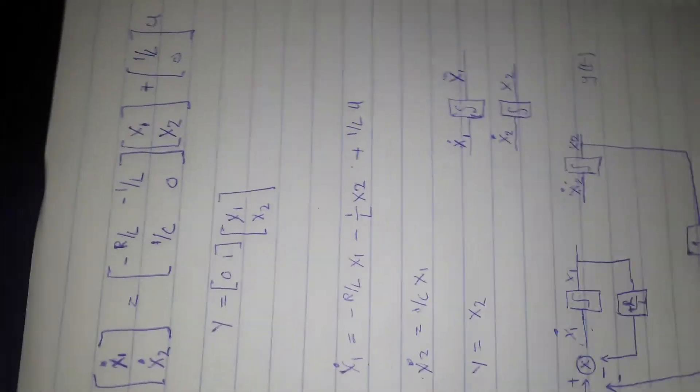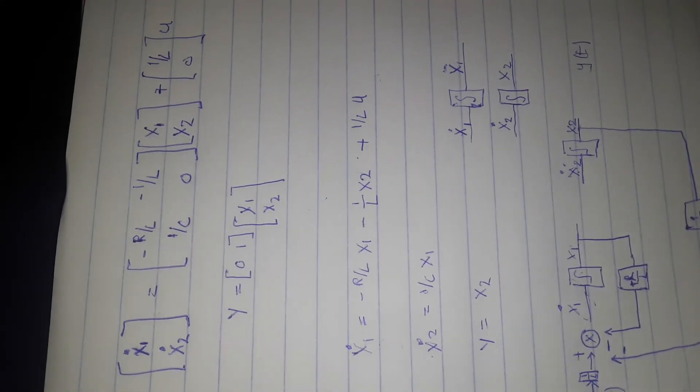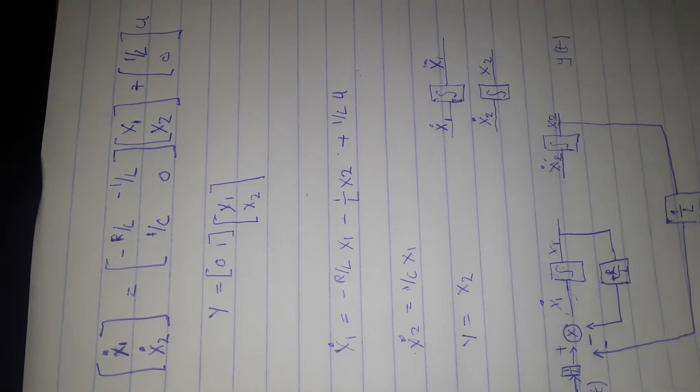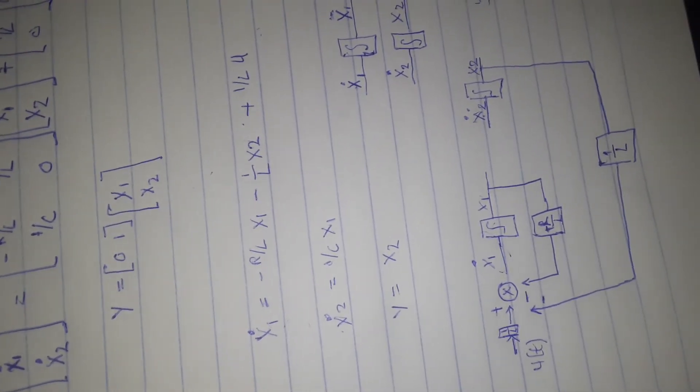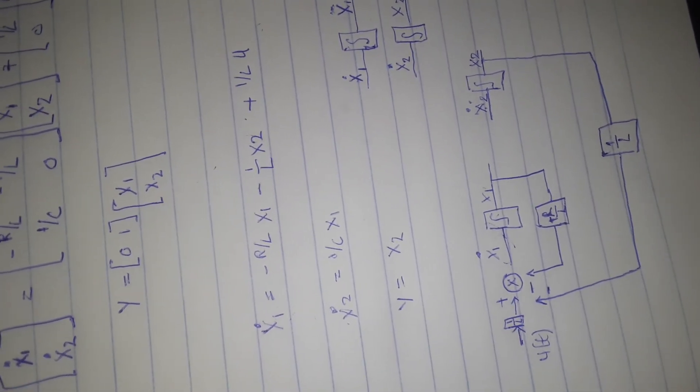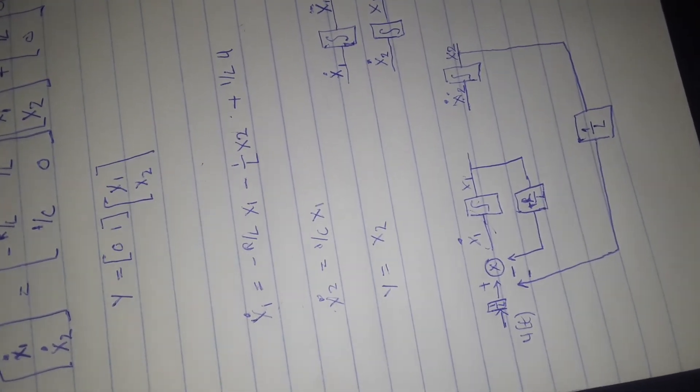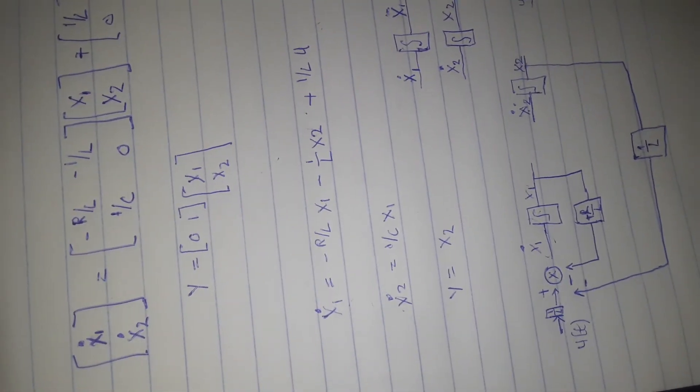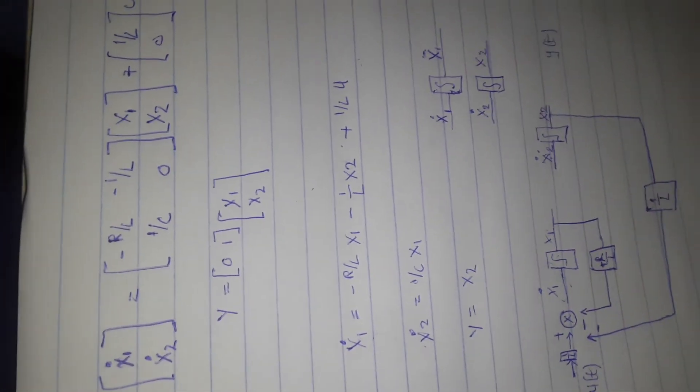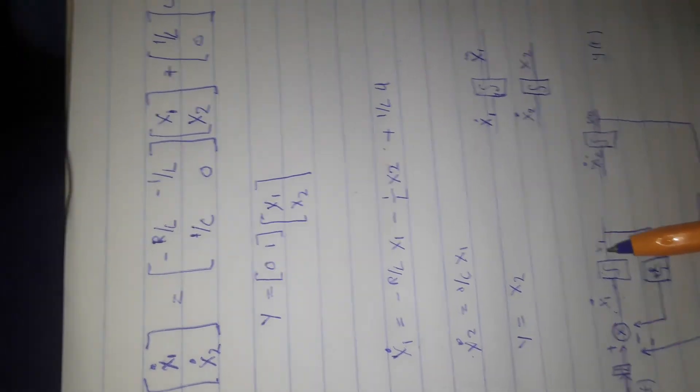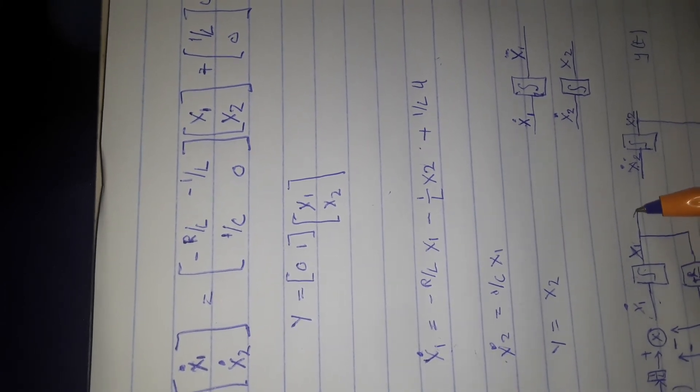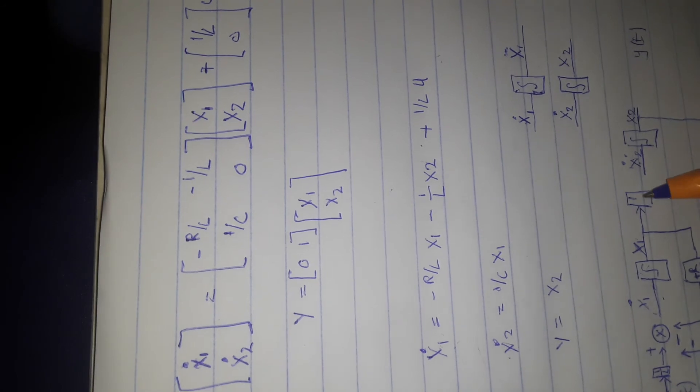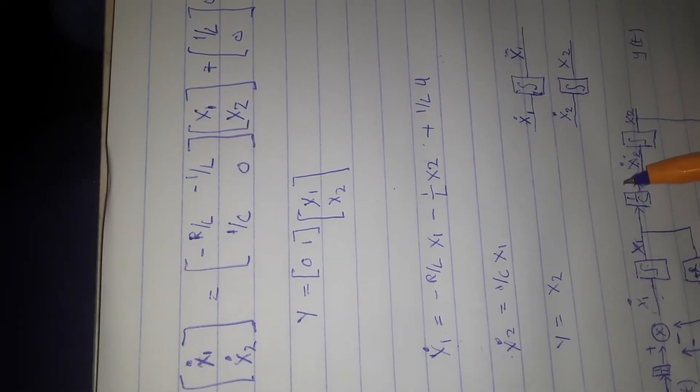Then I'm going to do this one. From our equation, we know that x2 equals x1. Sorry, let me just continue. Now we want to do this one. For this one, from our x1, you multiply it with the gain of 1 over C, and you're going to add it.